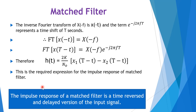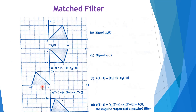The impulse response of a match filter is a time-reversed and delayed version of the input signal. This is proved from the equation h(t) = 2k/N0 times [x₁(t − T) − x₂(t − T)]. We can plot the impulse response by using this expression.